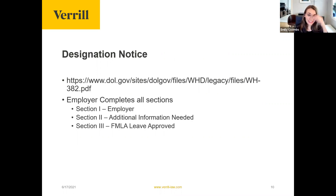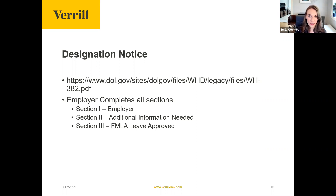The next form is the Designation Notice, completed entirely by the employer. Section one covers the basics of the request — whether leave is approved or not. Section two is filled out if additional information is needed, including requests for a second or third medical opinion. Section three contains details about the approved FMLA request, including whether the leave is paid and the return-to-work requirements. That form is also linked in the presentation materials.